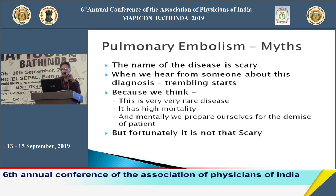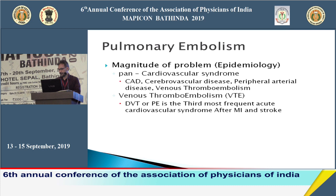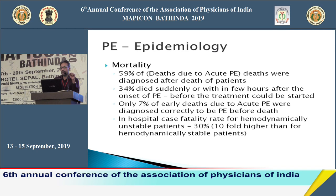Pulmonary embolism and DVT together constitute venous thromboembolism, which along with coronary artery disease, cerebrovascular disease, and peripheral arterial disease forms the pan-cardiovascular syndrome. DVT and pulmonary embolism together are the third most frequent acute cardiovascular event after MI and stroke.